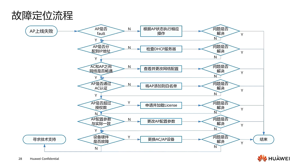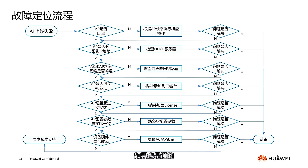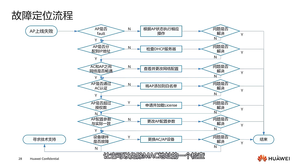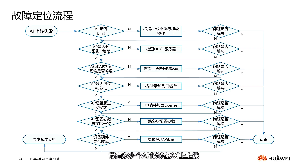If the AP has an IP address, check whether the connection between the AP and AC is clear. If not, you need to examine static routes, dynamic routes, protocols, and other configurations. If the connection is clear, then check if the AP has passed the AC's authentication, including MAC address authentication and serial number authentication. If authentication fails, you can also add the AP to a whitelist to bypass the MAC address check.